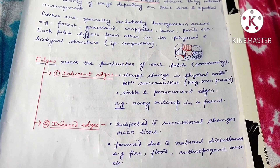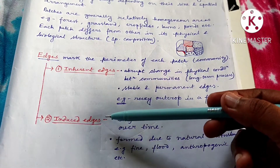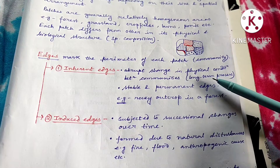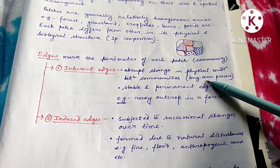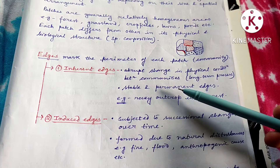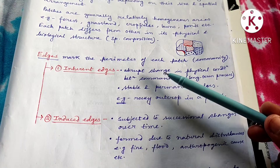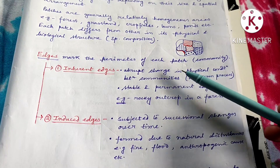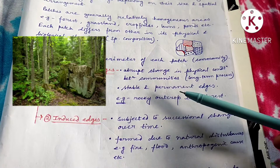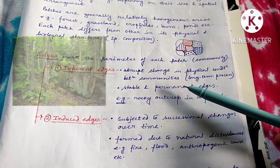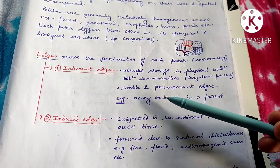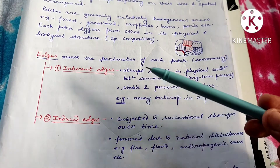There are two types of edges: inherent edges and induced edges. An inherent edge is formed due to a long-term natural process, and it is stable and permanent. You can find an abrupt change in physical condition between communities — for example, a forest with a rocky outcrop inside it. The edge between the forest and that rocky outcrop shows an abrupt change, not a clinal change, and the edge is stable and permanent — that is why it is known as an inherent edge.